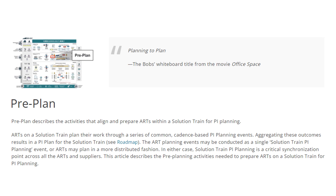Aggregating these outcomes results in a PI plan for the solution train. The ART planning events may be conducted as a single solution train PI planning event, or ARTs may plan in a more distributed fashion. In either case, solution train PI planning is a critical synchronization point across all the ARTs and suppliers. The idea of having pre-plan is to have alignment and improvement between your overall solution planning and the individual ARTs planning of your solution train.